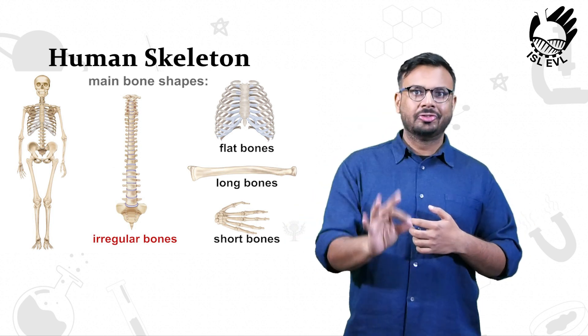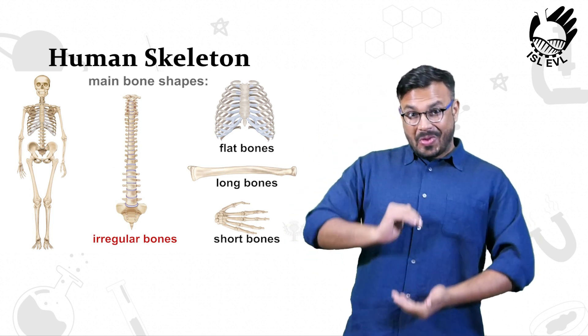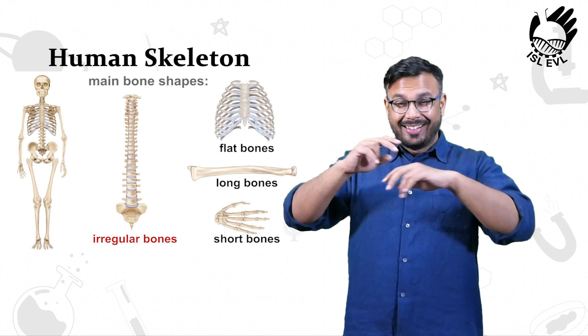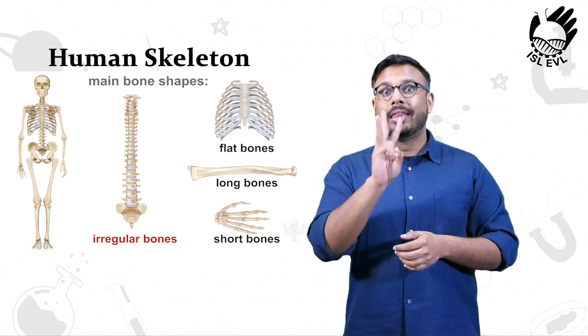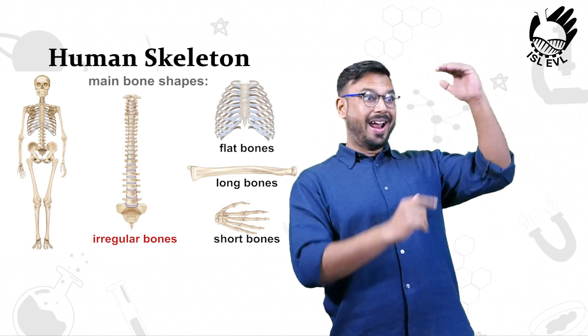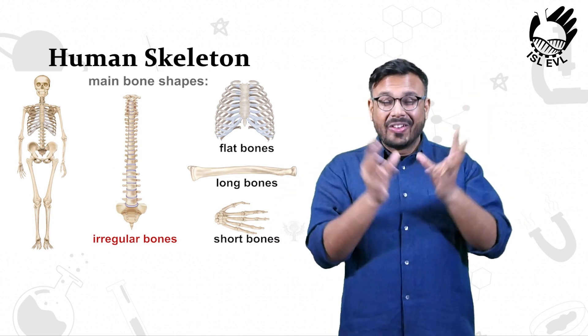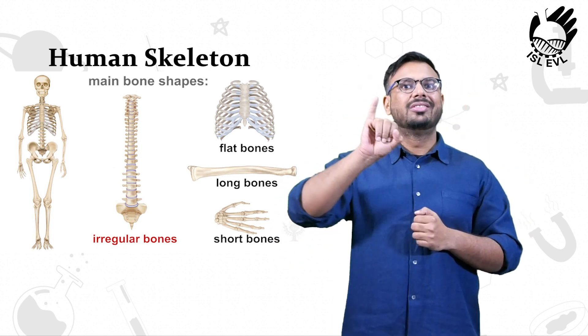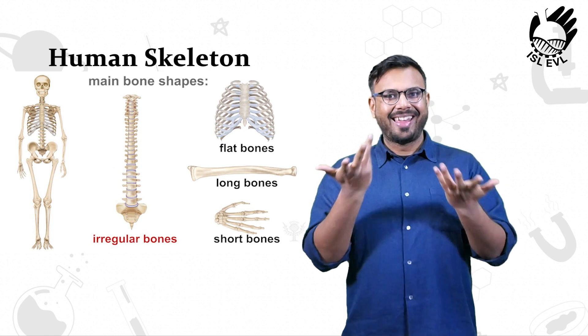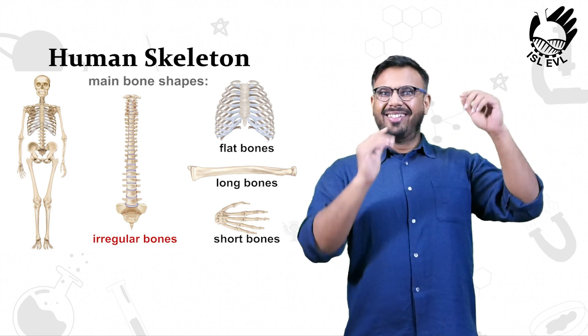Do you want to know a fact? During infancy, humans have 300 bones. As we grow older, this number comes down to 206. Isn't that interesting that we have more bones in our body when we are young?